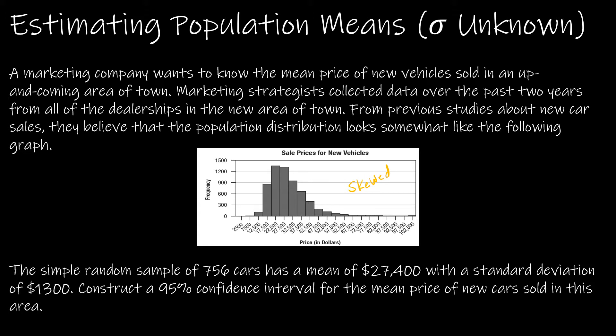The simple random sample of 756 cars - notice that's going to be n and n is far greater than 30. So even though we have a skewed population, we know that n is greater than 30 and that it's a simple random sample. They give us a mean of $27,400 and a standard deviation. Notice they do not give us the population standard deviation. Therefore, this means sigma is unknown, so all conditions are met.